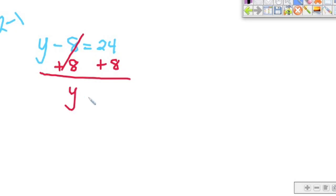Now the y is by itself. We've reached our goal of getting the y alone. Now we just have to solve this side of the equation. We have 24 plus 8 is going to give us 32. And that's your answer.